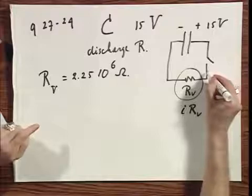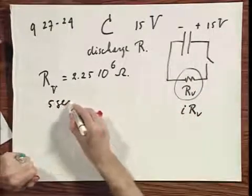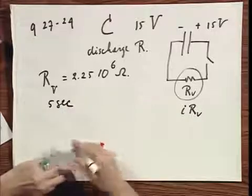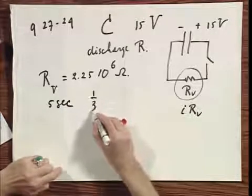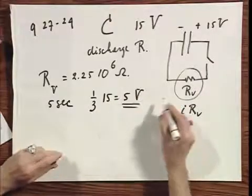You start throwing the switch, what do you see? 15 volts, of course. Now you wait five seconds, and what do you see? You only see one-third of 15 volts. You only see five volts. At least that's a given.